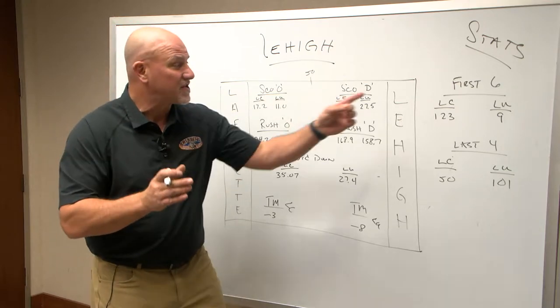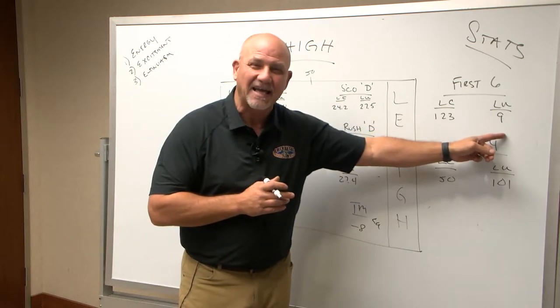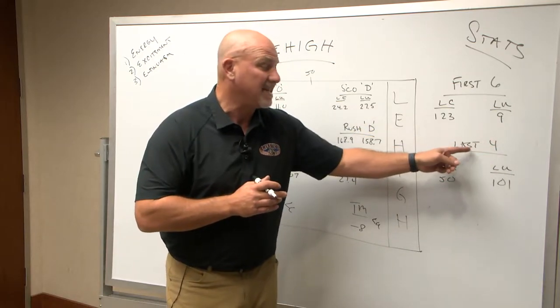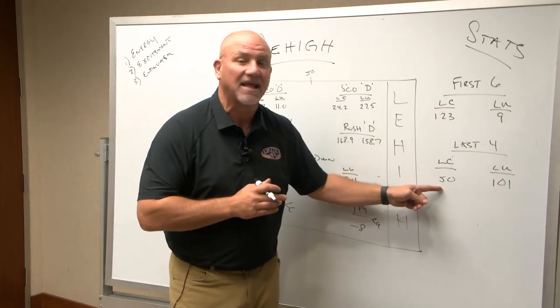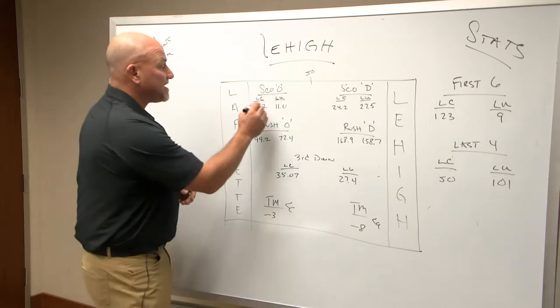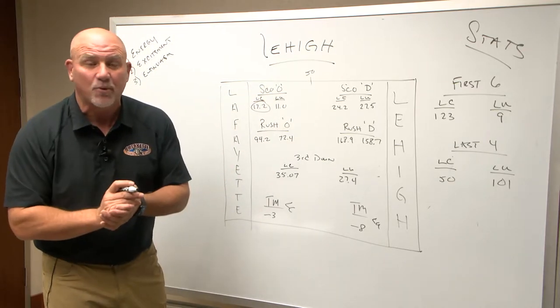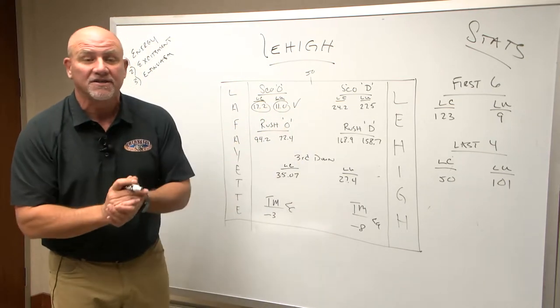Lafayette in the first six games of the season put up 123 points. Lehigh, a dismal nine points. In the last four games, 101 points Lehigh has put up to Lafayette's 50. So Lafayette offense really needs to get it going. If you talk about scoring offense, Lafayette's averaging about 17.2, Lehigh about 11. So you got to give the check mark right there to the Leopards.